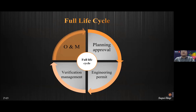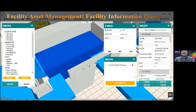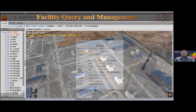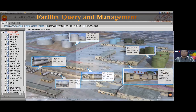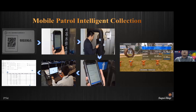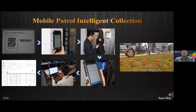The last stage of the full life cycle is operation and maintenance. We can query facility information to achieve facility asset management, such as pipeline information and factory facilities information. Traffic analysis can be used in the operation management system — we can connect IoT to obtain real-time traffic data in the pipe network and reflect it in the smart city system, for natural gas, drinking water, and other flow data. Mobile virtual intelligence collection can also be used in the pipeline management system — for example, using a mobile device to scan a QR code to get the status and information of a water meter.